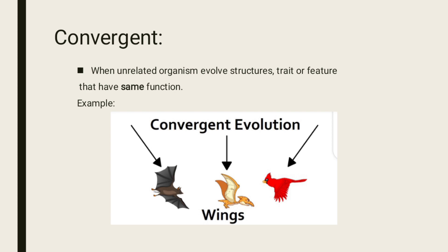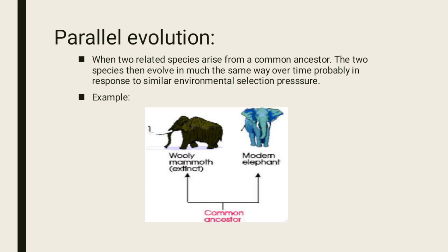We call it convergent evolution. When two related species arise from a common ancestor, the two species then evolve in much the same way over time, probably in response to similar environmental selection pressure, and the two different species then become different.